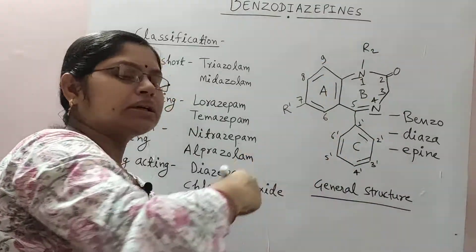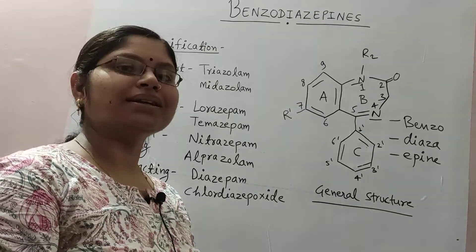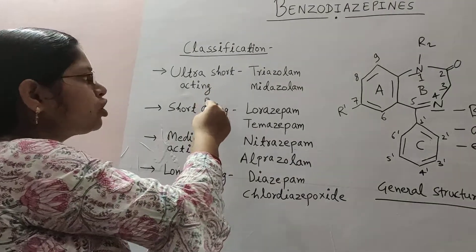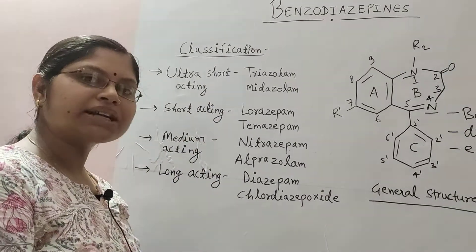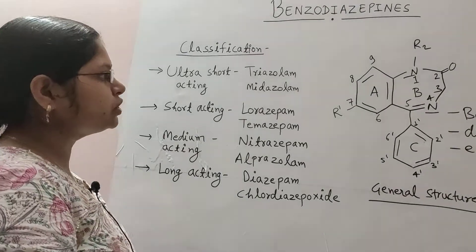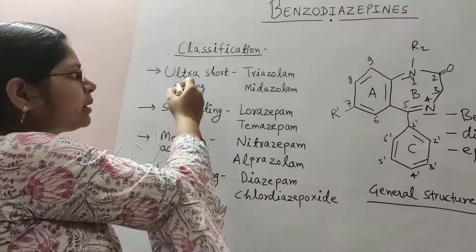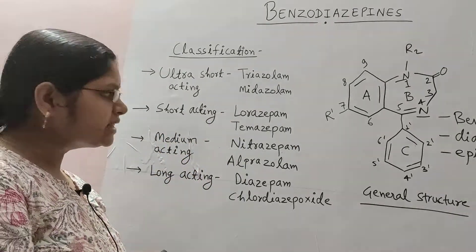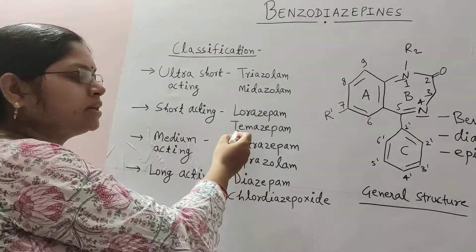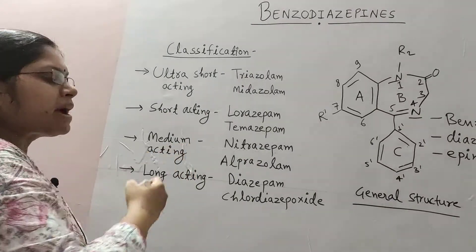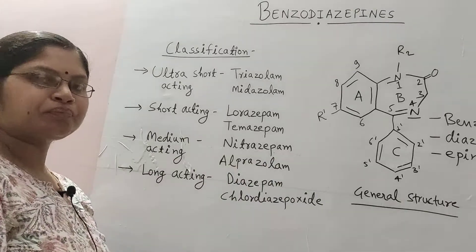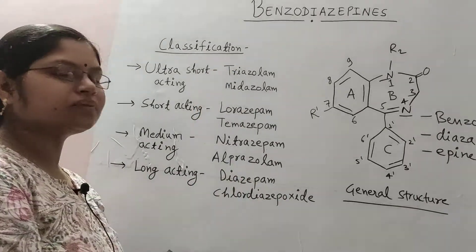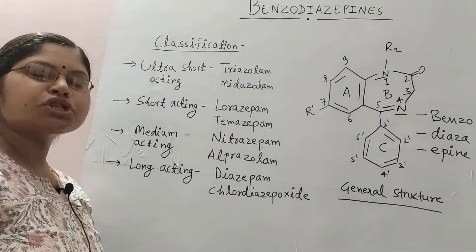Modification in this general structure results in various drugs of this category, which are classified into four forms: ultra-short acting, short acting, medium acting, and long acting. Ultra-short acting examples are Triazolam and Midazolam. Short acting examples are Lorazepam and Temazepam. Medium acting examples are Nitrazepam and Alprazolam. Long acting examples are Diazepam and Chlordiazepoxide.